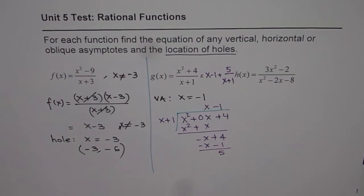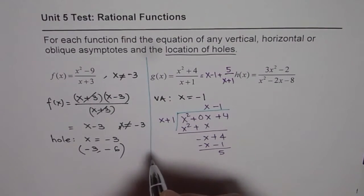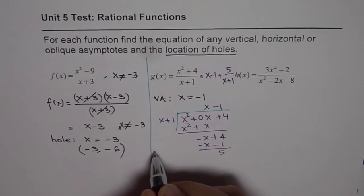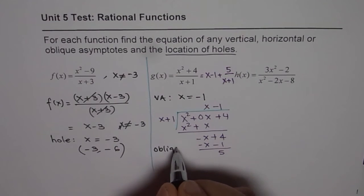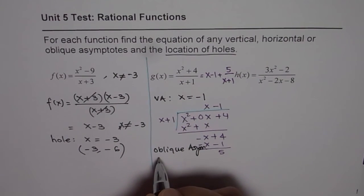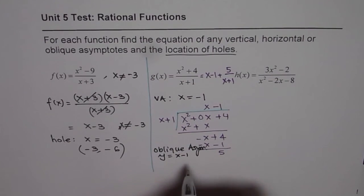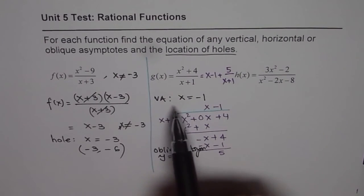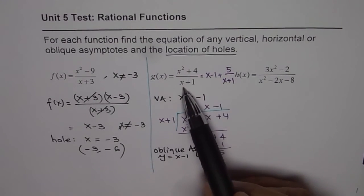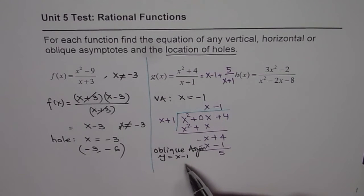So clearly, we have an oblique asymptote, and the equation of oblique asymptote is x minus 1. So we have oblique asymptote here, let me write here. And the equation is y equals to x minus 1, a linear oblique asymptote. So there are two, there is one discontinuity, that is the vertical asymptote at x equals to minus 1, and an oblique asymptote.